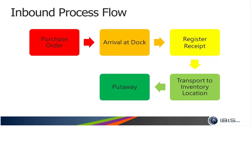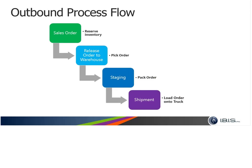A typical inbound process flow begins with issuing a purchase order, then goods arrive at the dock and we register a receipt. From that point, we transport the goods to the inventory location where they are put away. A typical outbound process flow begins with a sales order where inventory is reserved. The sales order is then released to the warehouse where it is picked, staged for packing — whether into a container or onto a pallet — and then the shipment is loaded onto a truck.